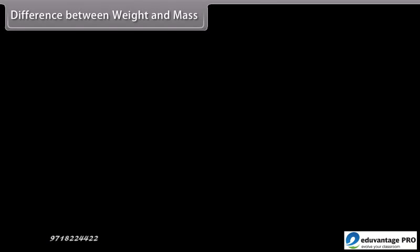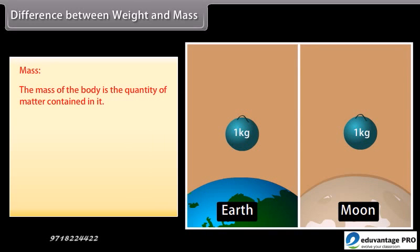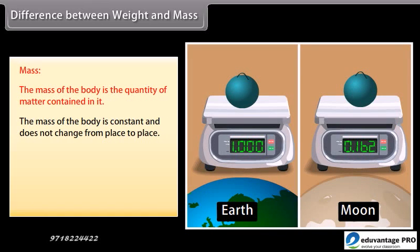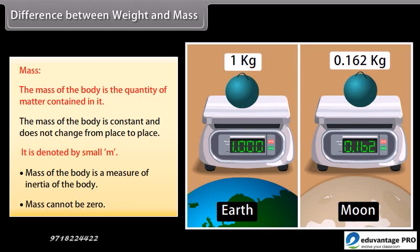Mass: The mass of a body is the quantity of matter contained in it. The mass of a body is constant and does not change from place to place. It is denoted by small m. Mass is a measure of the inertia of the body. Mass cannot be zero.